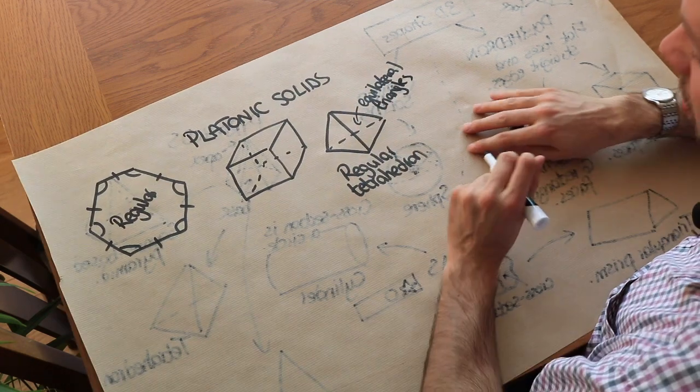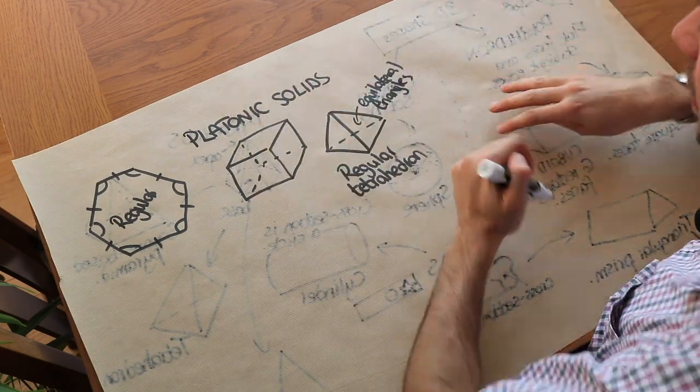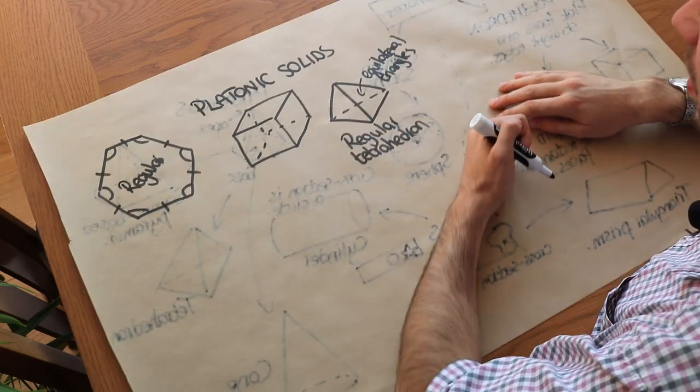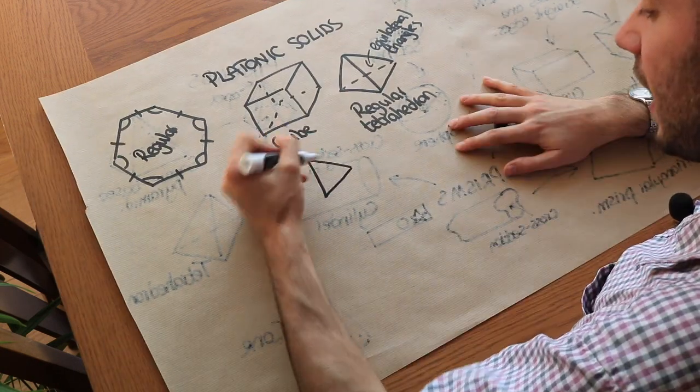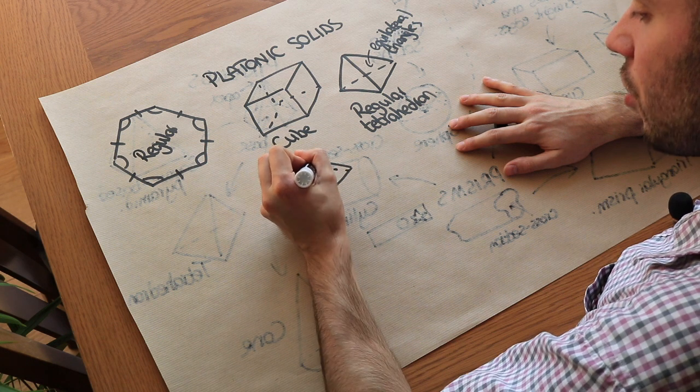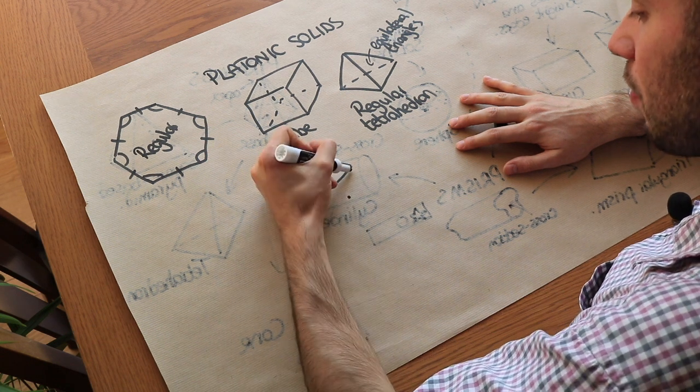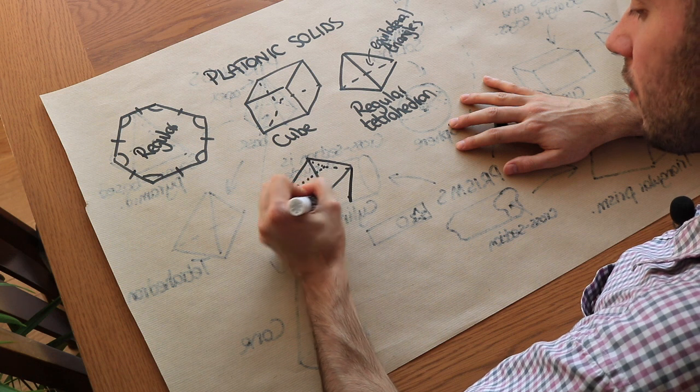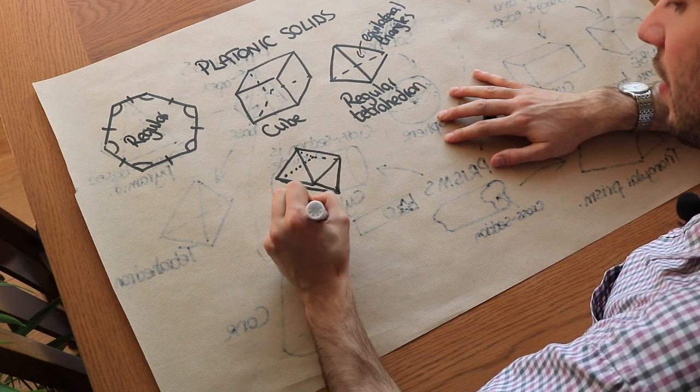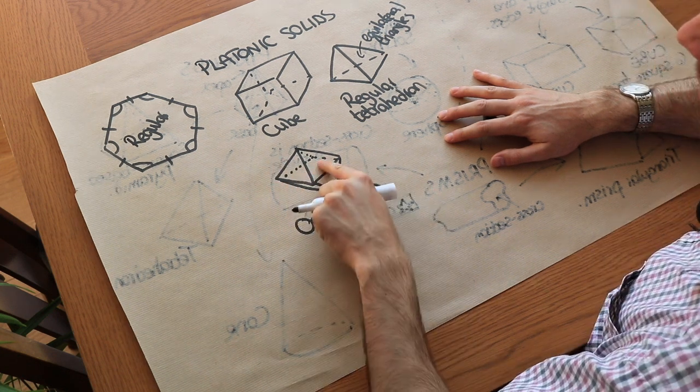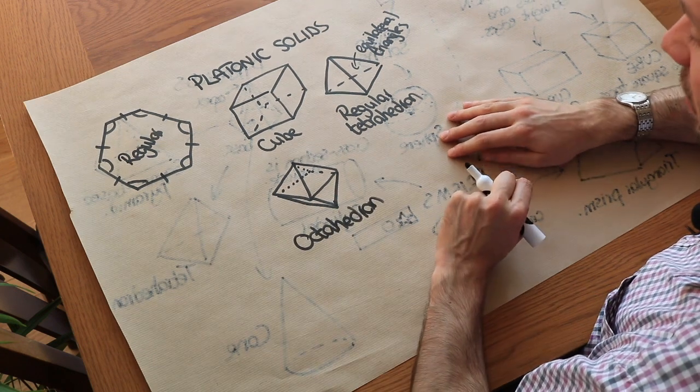And that is also a platonic solid because we have all the same faces and all the lengths are the same as well. We could also put eight triangles together. So if you imagine putting two square base pyramids together, we've got a bottom point here, it's hard to draw. That is known as an octahedron. And we can see that all the faces are equilateral triangles again.